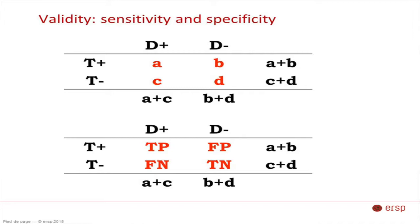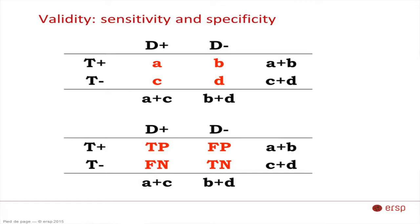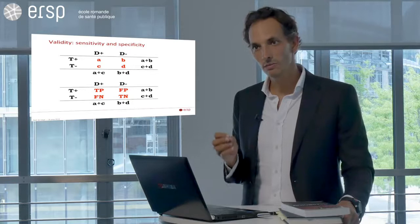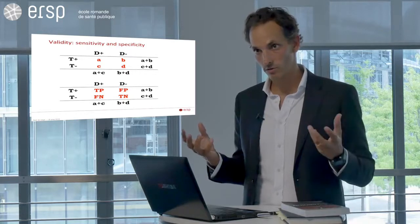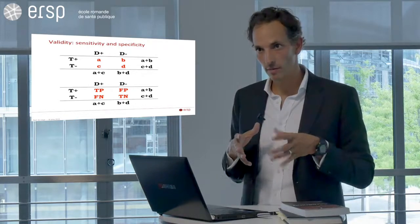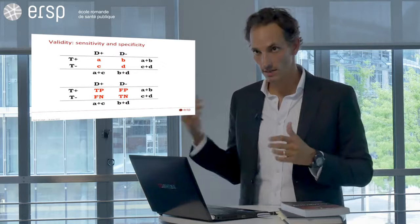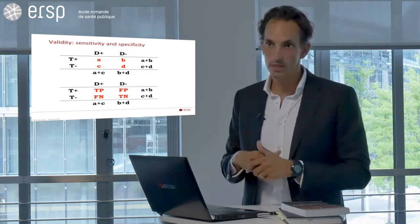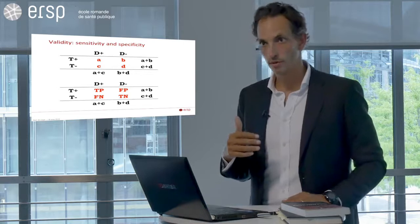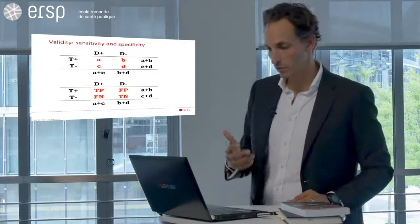Sensitivity and specificity will help you describe or assess the number of people in what we call the true positive — you know they have the disease and they test positive; this is the TP cell. Other participants are known not to have the disease and your test is negative — this is the true negative. When there is a mismatch between the disease and the test result, you will have false negatives — people known to have the disease but who test negative — and false positives — people known not to have the disease but who test positive.